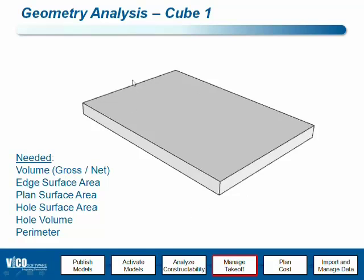For this cube, we have determined that it should behave as a slab, which means that we need volume — both gross and net. We need edge surface area, planned surface area (so top and bottom). Probably if there is a hole in there, we want to get the hole surface area and hole volume as well. And then for slabs, we want to get the perimeter as well.